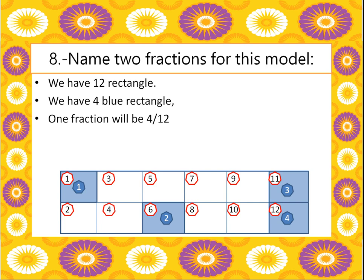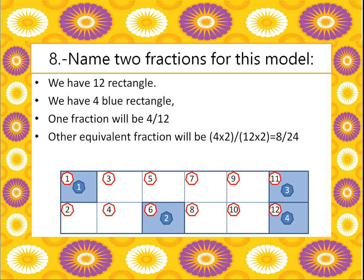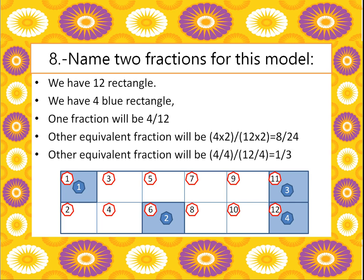One equivalent fraction will be 4 times 2 divided by 12 times 2, which gives 8 over 24. Another equivalent fraction will be 4 divided by 4, over 12 divided by 4, which gives 1 third.